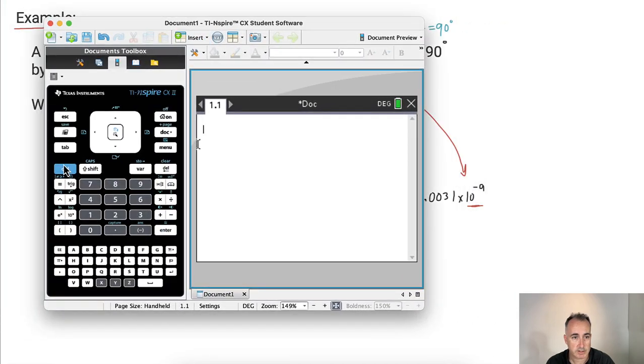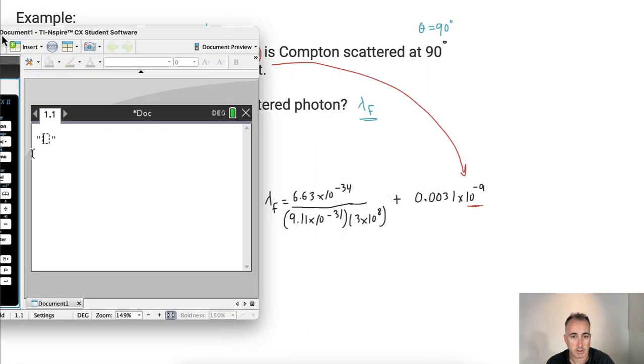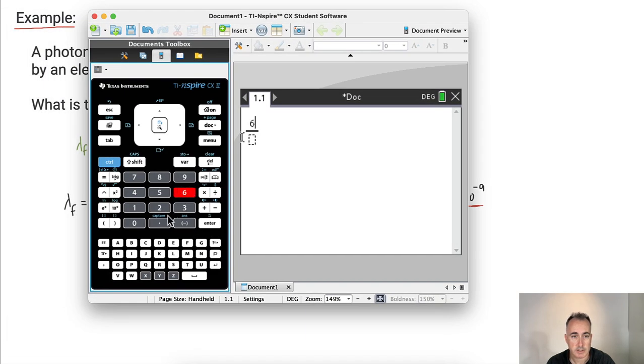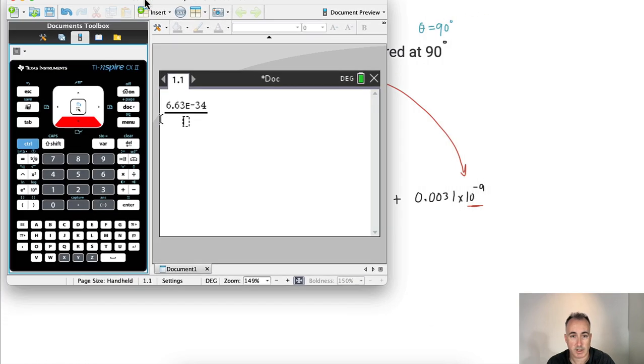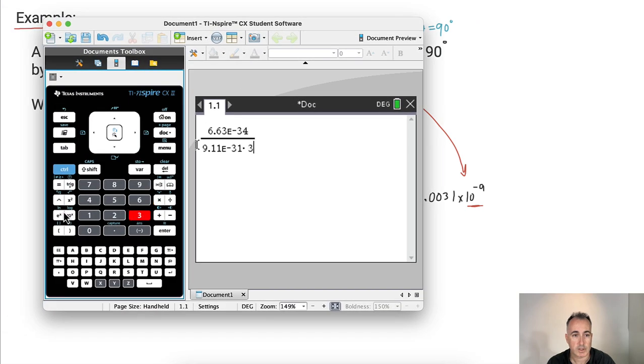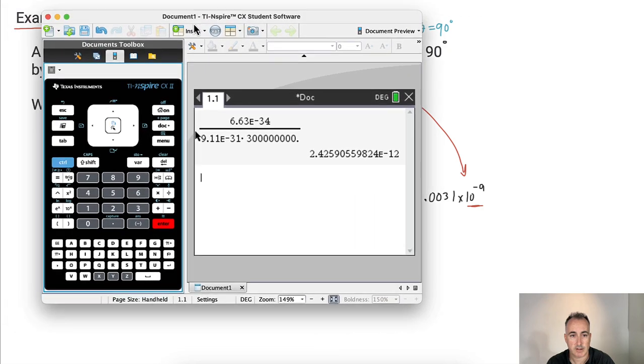I'm going to say 6.63 times 10 to the minus 34, all that divided by 9.11 times 10 to the minus 31, all that times 3 times 10 to the 8. I have an answer here, and I want to take that answer and add to it 0.0031 times 10 to the minus 9. And I get this answer, 5.5259 times 10 to the minus 12.